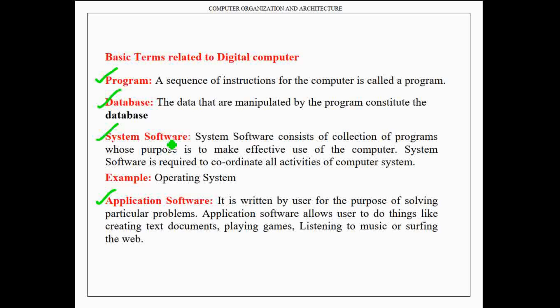The next basic terminology is system software. System software consists of a collection of programs whose purpose is to make effective use of the computer. It is required to coordinate all the activities of the computer system. The well-known example of system software is the operating system, whose role is to coordinate the activities of all computer resources.